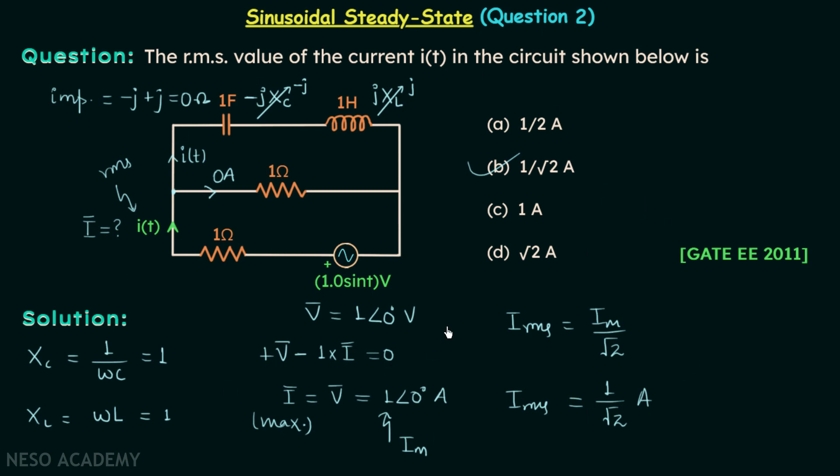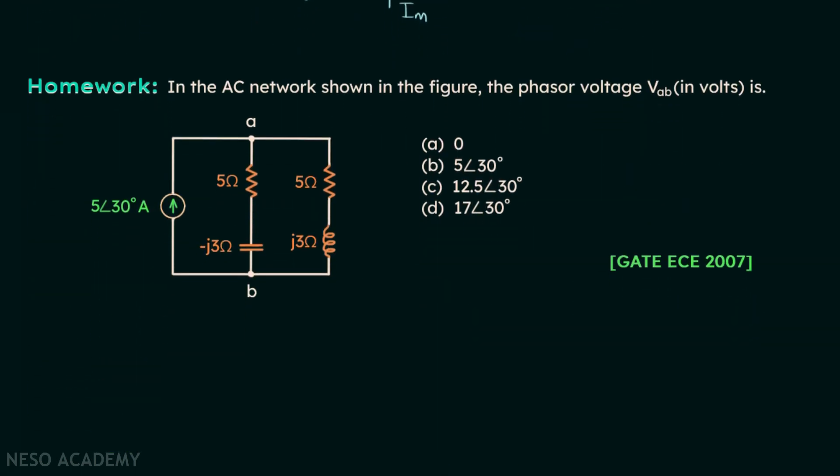This is all for this question. Now we will move on to the homework problem. In the homework problem you are required to find out the phasor voltage VAB. This is the phasor voltage and this is the circuit. Try to solve this question on your own, and you will get the link to the solution in the comment section and also in the description.